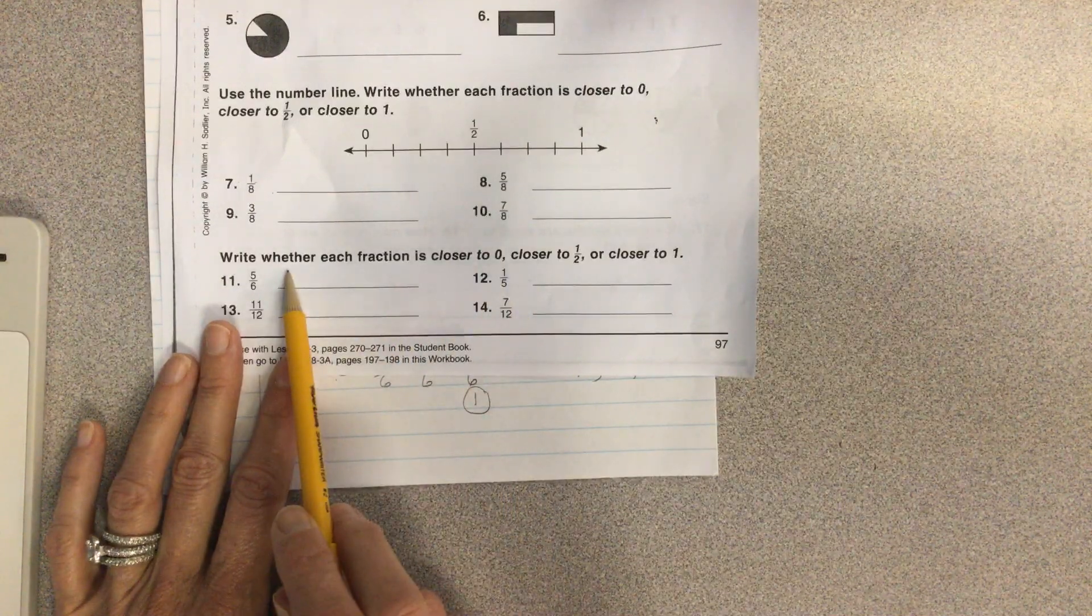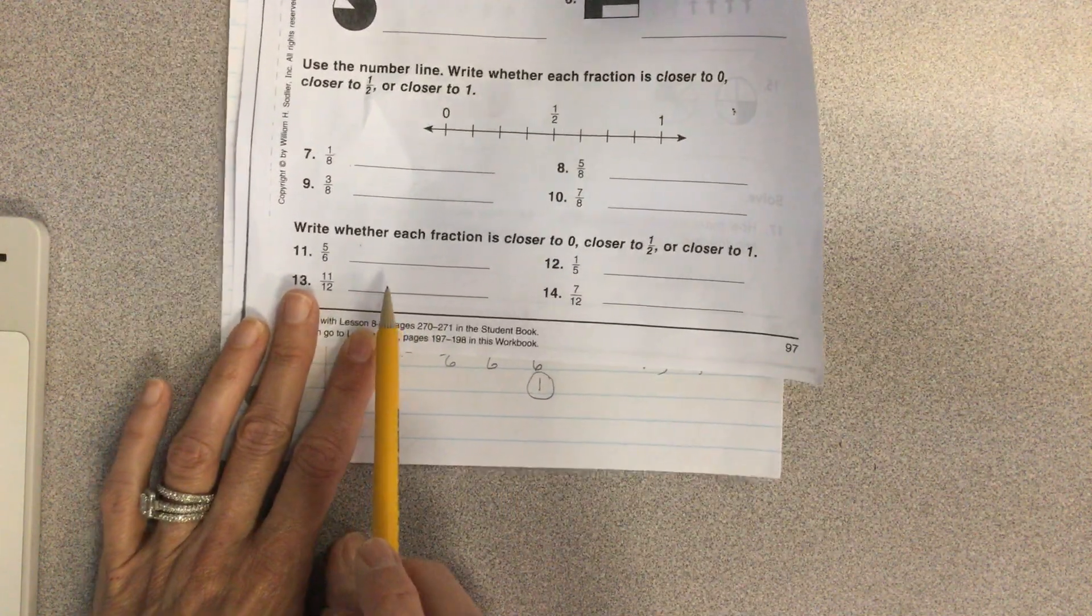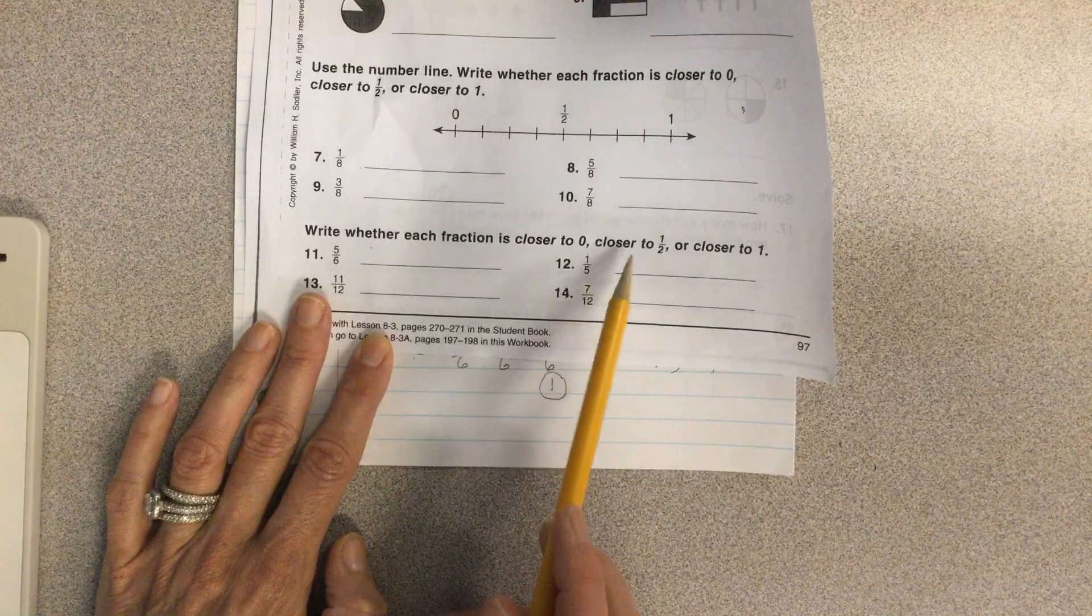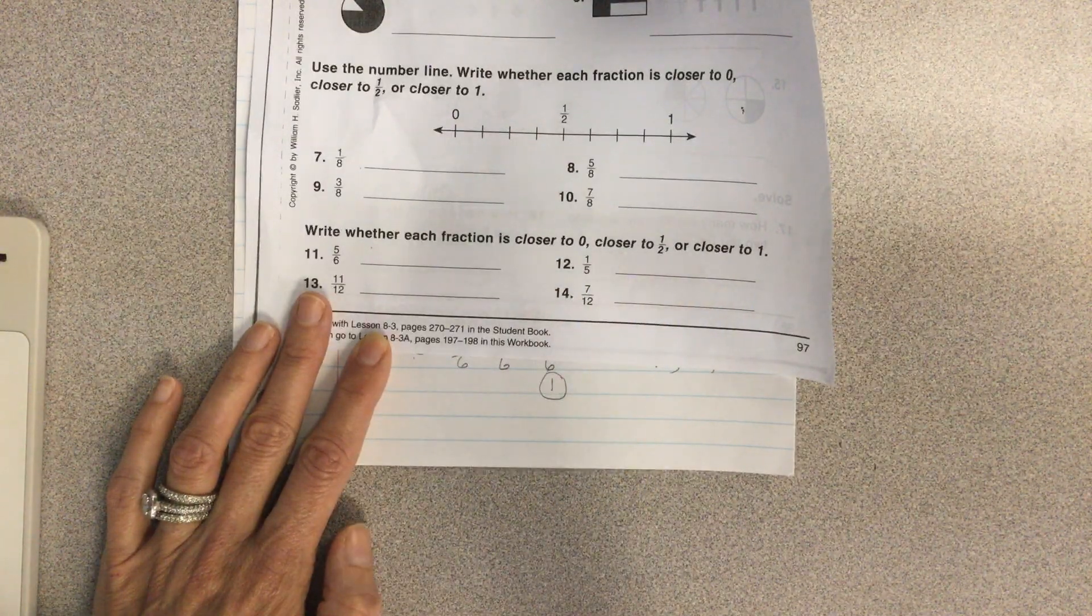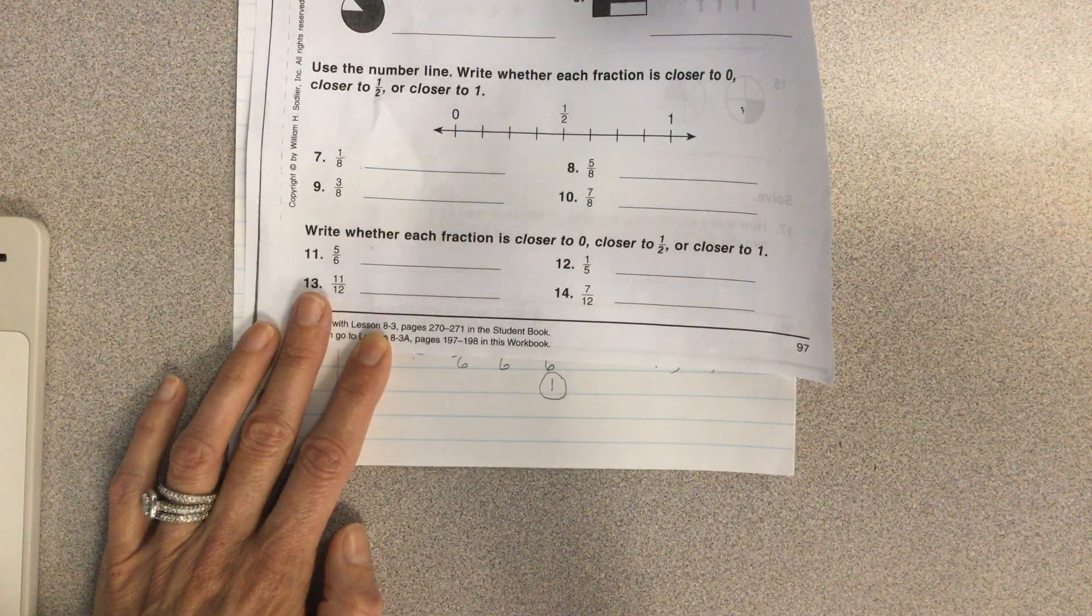You're going to want to plot all of your fractions on the number line to make it easier for you. And then for these, you could choose to make a number line to tell whether it's closer to zero, a half, or one. Some of them will be pretty obvious. Some of them maybe not so much.